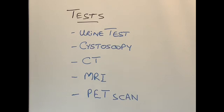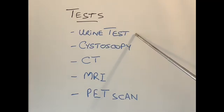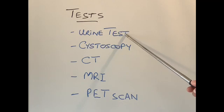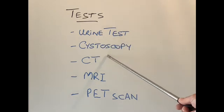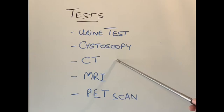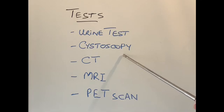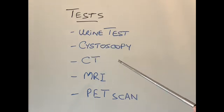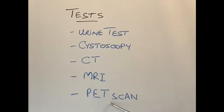To diagnose bladder cancer, a simple urine test to check for blood gives an indication of the possibility of bladder cancer. A urine sample can also be examined under the microscope for cancer cells. However, cystoscopy — a camera inserted under local anesthetic through the urethra from below, looking up into the bladder — is the easiest and most commonly used investigation to diagnose bladder cancer. To check for cancer spread and staging, further tests like CT scan, MRI scan, or PET scan can also be used.